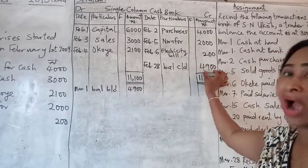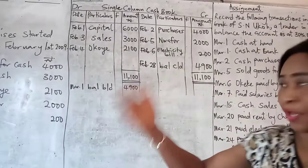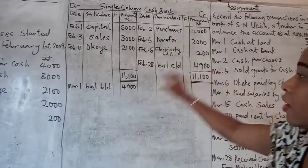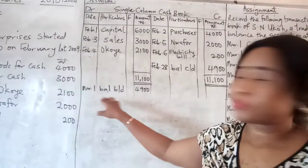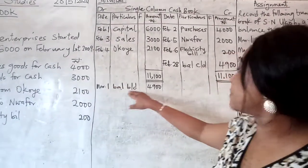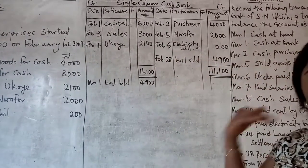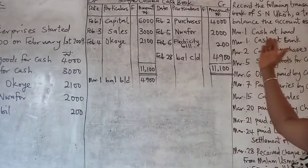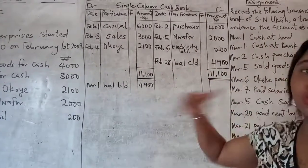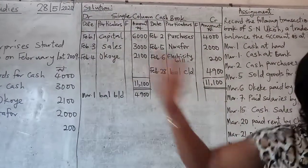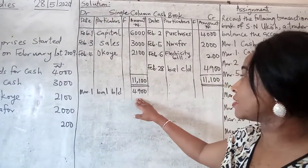This is the money you have at hand to continue your business in the next period. That money, on 1st March, is your balance brought down. The difference after subtracting your expenses — the money you spent from the ones you received — is your balance carried down. That is what you use to continue your business for the month of March. So, 1st March, balance brought down: 4,900 Naira.